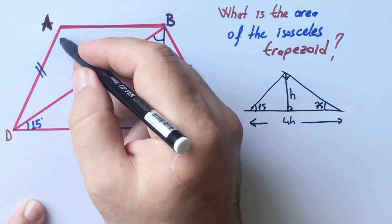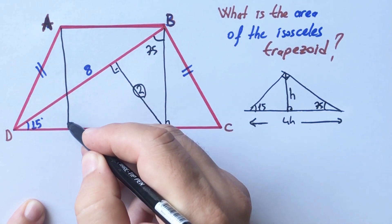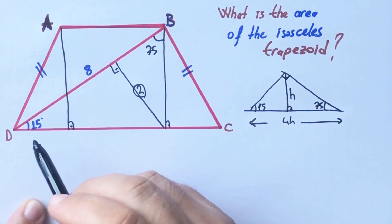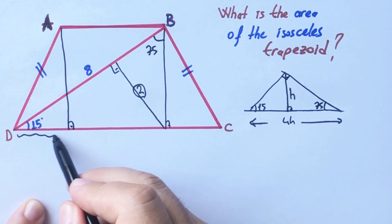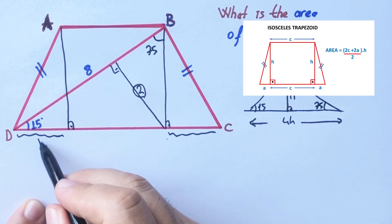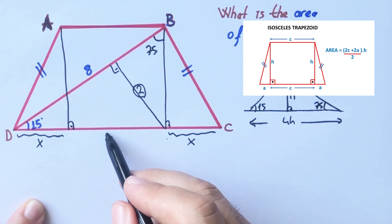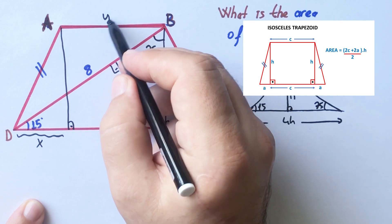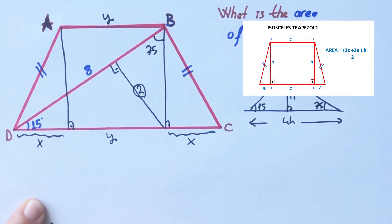And then we know that in an isosceles trapezoid, these two parts must be equal. So if there's an x unit here, this length must be x unit. And if there's a y unit here, this length must be y unit.